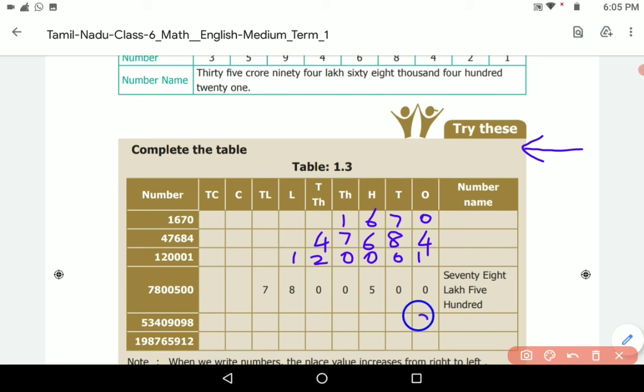So here write the number 8 here, 9, 0 here, 9, 0, 4, 3, 5. So this is 5 crore, 34 lakh, 09 thousand, 098. Got it?